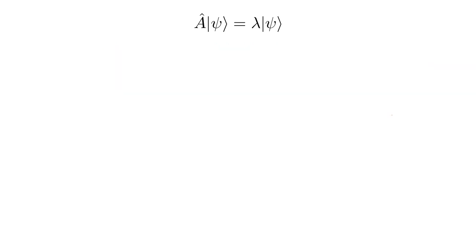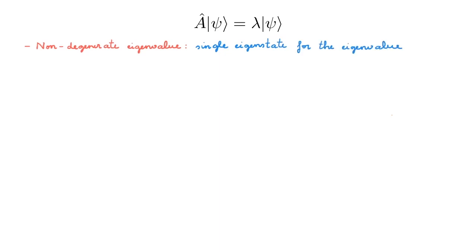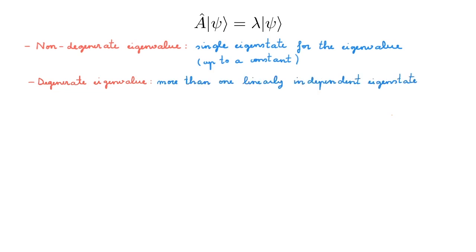The next property I want to discuss is the degeneracy of eigenvalues. We say that an eigenvalue is non-degenerate if there is a single eigenstate associated with that eigenvalue — up to a constant alpha. By contrast, we say that an eigenvalue is degenerate if there is more than one linearly independent eigenstate with that eigenvalue. Degenerate eigenvalues bring in many subtleties in quantum mechanics, so we will constantly make this distinction.